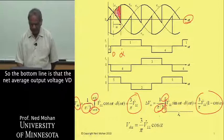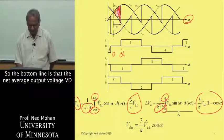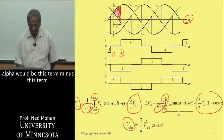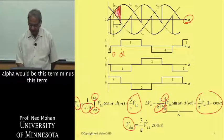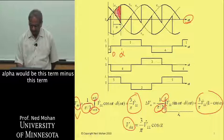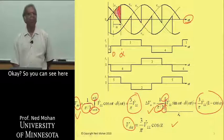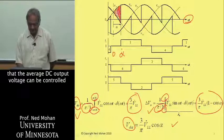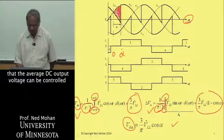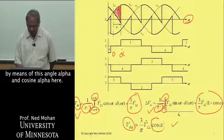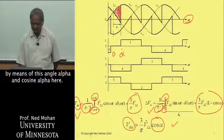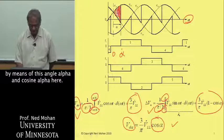The net average output voltage, VD alpha, would be this term minus this term, which gives us this term over here. You can see that the average DC output voltage can be controlled by means of this angle alpha and cosine alpha here.